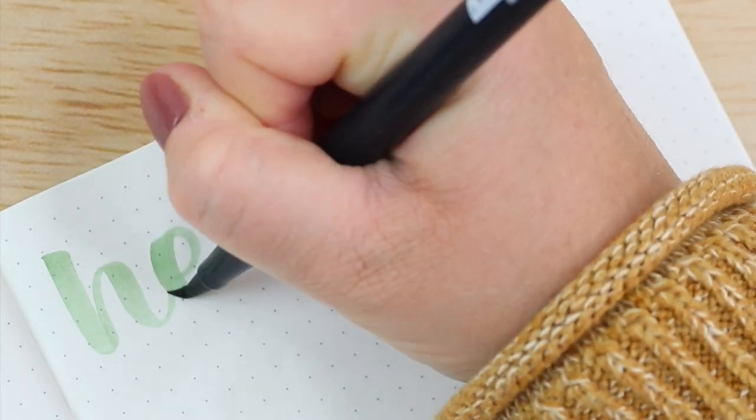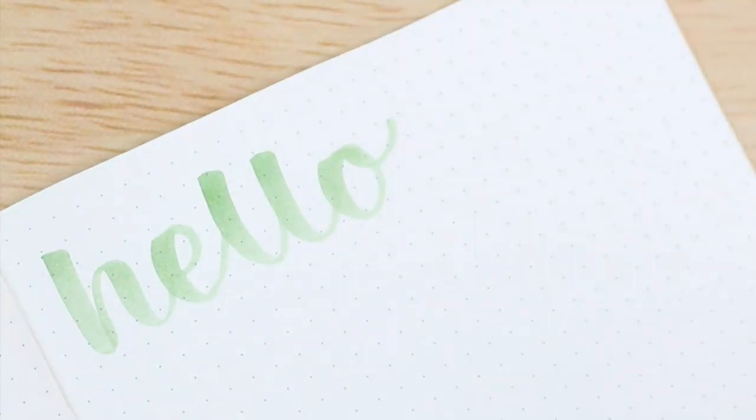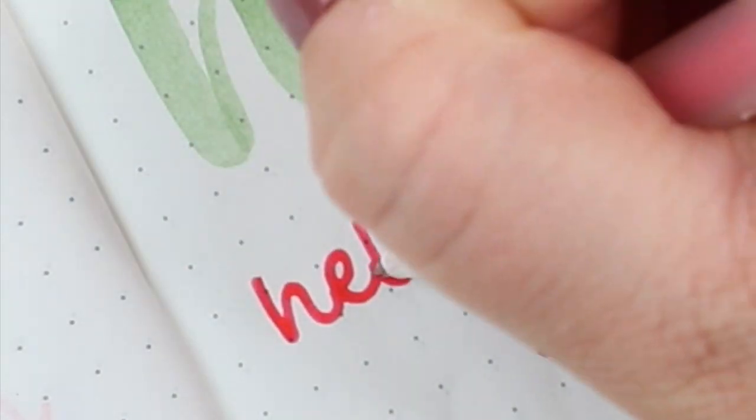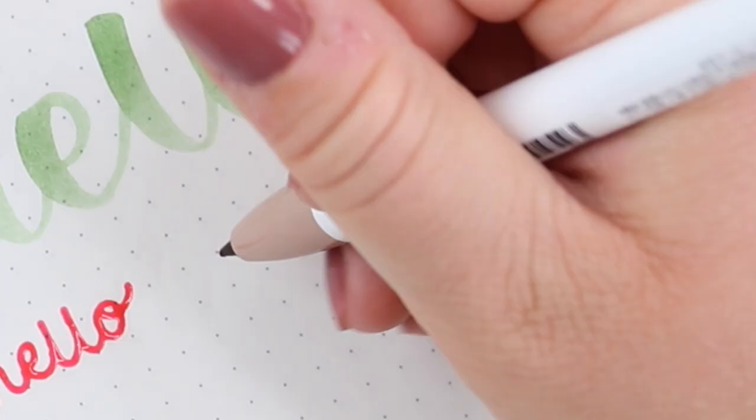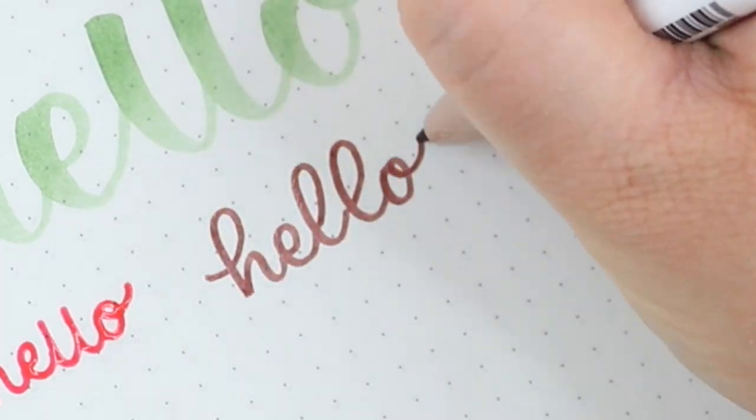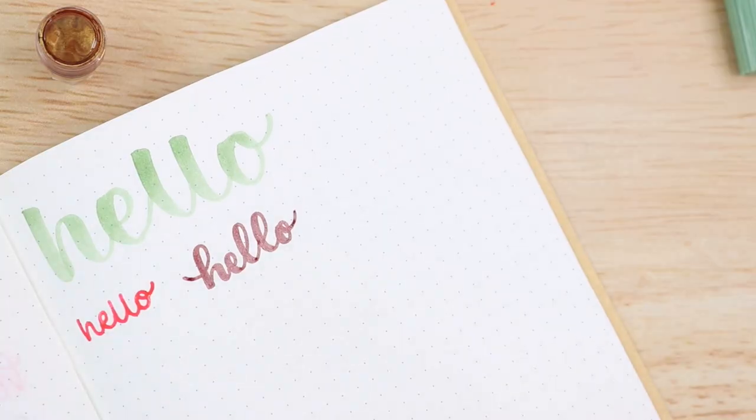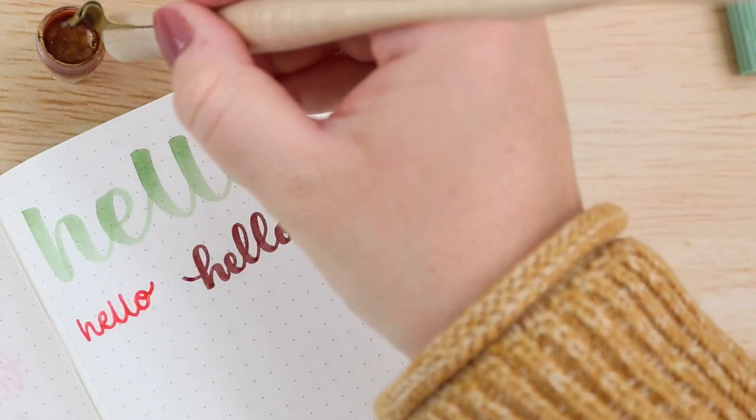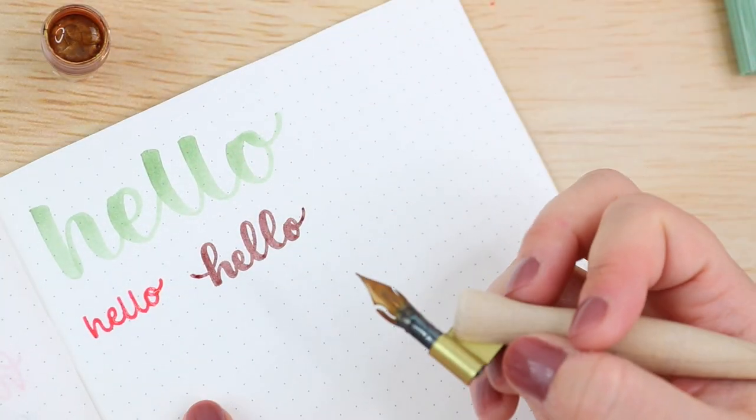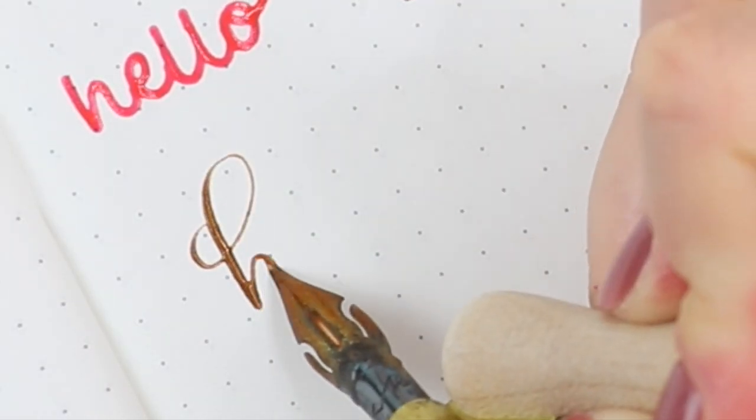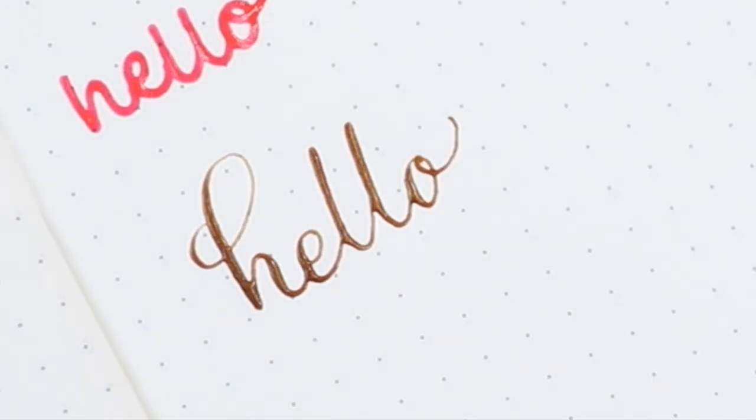And the fourth hand lettering mistake you might be making is being afraid to try something new. There are so many ways that we can be creative, even within hand lettering. Changing up our technique is one way to create a unique style of hand lettering, but it's not the only way. Switching our tools is another way. Whether it's watercolor lettering, adding shading, writing in block letters, even monoline watercolor.